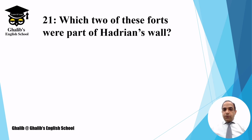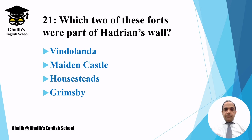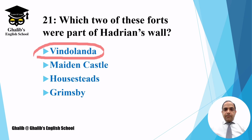Question number twenty-one: which two of these forts were parts of Hadrian's Wall? The four options are Vindolanda, Maiden Castle, Housesteads, and Grimsby. We need to choose two answers. The correct two are Vindolanda and Housesteads.